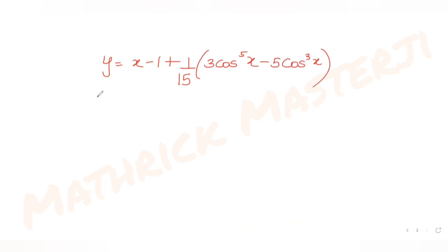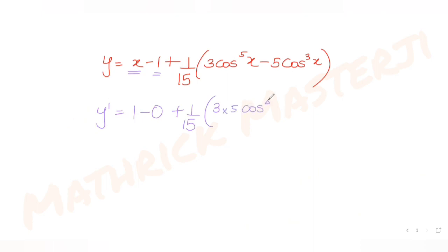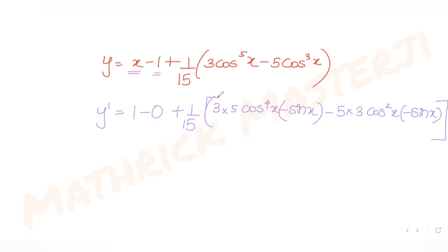Let's find the derivative y'. The derivative of (x - 1) is 1. For the second part, applying the chain rule: derivative of (1/15)(3cos⁵x - 5cos³x) gives (1/15)[3·5·cos⁴x·(-sin x) - 5·3·cos²x·(-sin x)], which simplifies further.